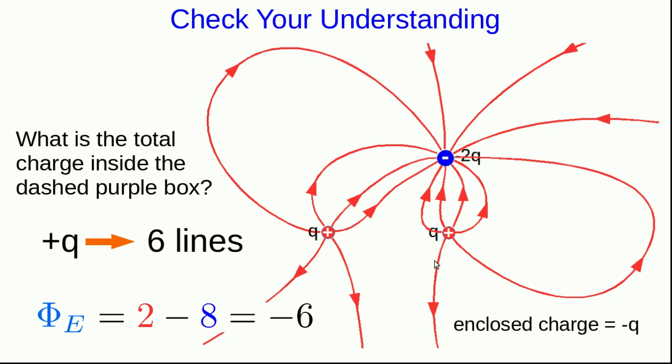And you can verify for yourself that there are six lines coming out of this positive q, and twelve lines going into this negative two q. And so I've drawn the diagram correctly. But one thing for you to try out is try some different surfaces that all enclose these two charges.